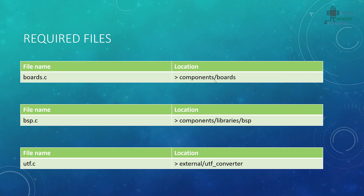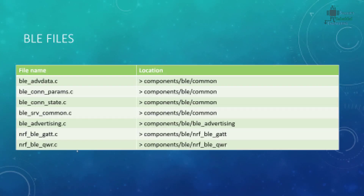The UTF file is for the conversion of text formats and we will be using this a lot. These files are for the basic project and are important — make sure you include them, otherwise your project will not work.